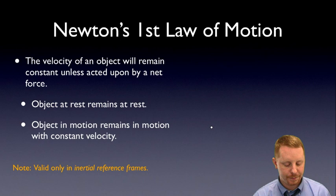Let's start by talking about Newton's first law of motion itself. The velocity of an object will remain constant unless acted upon by a net force. This means that an object at rest will remain at rest, and an object in motion will continue in motion with the same speed and the same direction, or at constant velocity, unless it's acted upon by a net force.